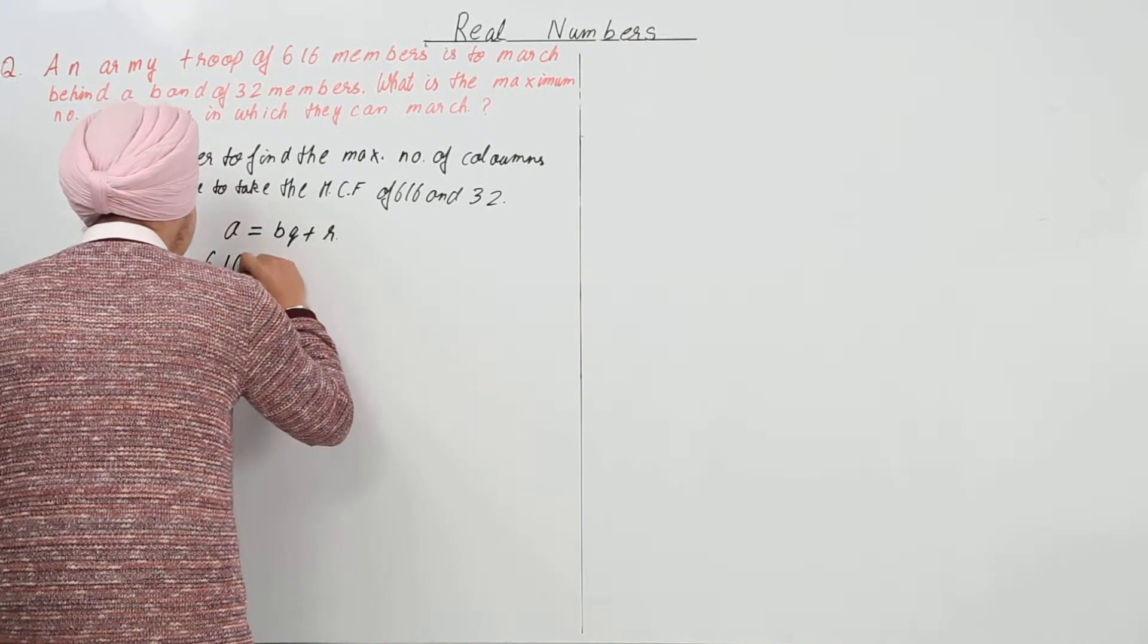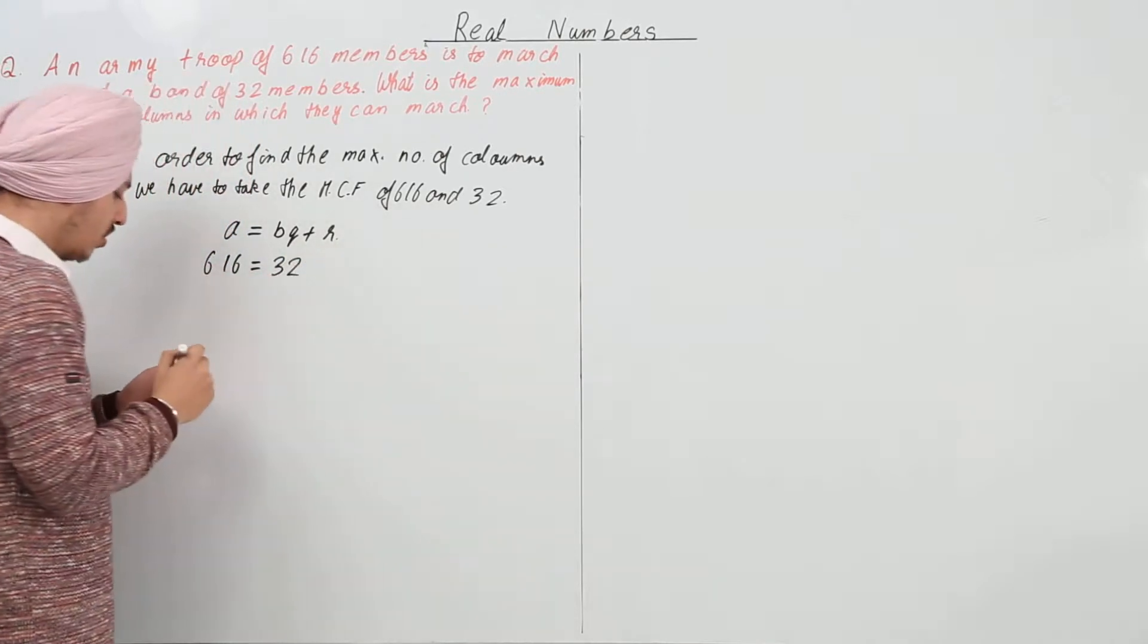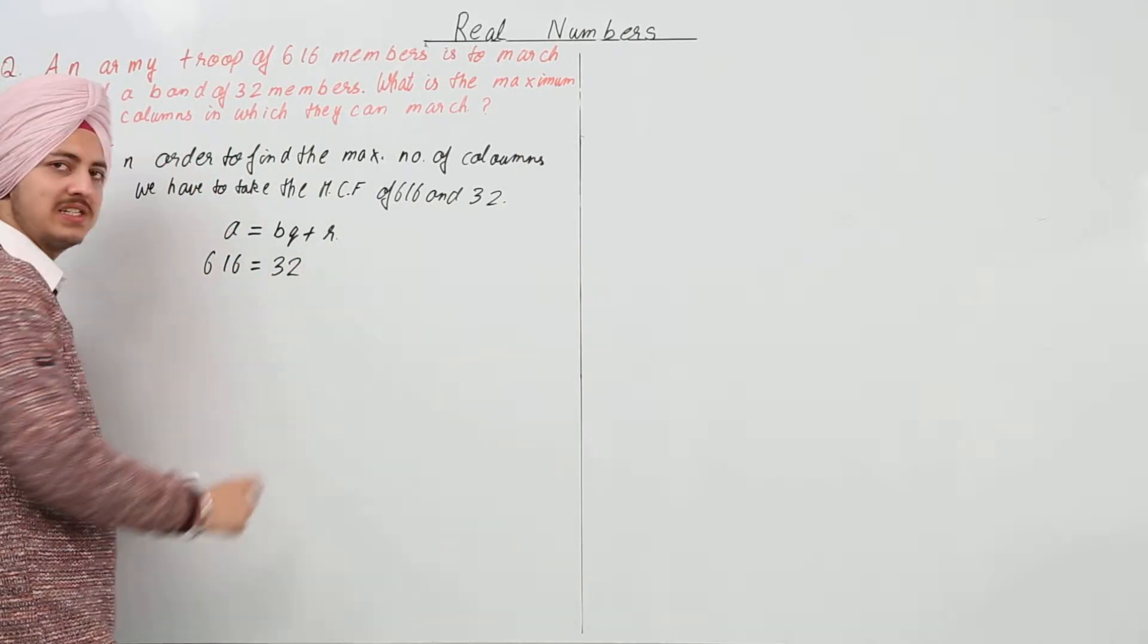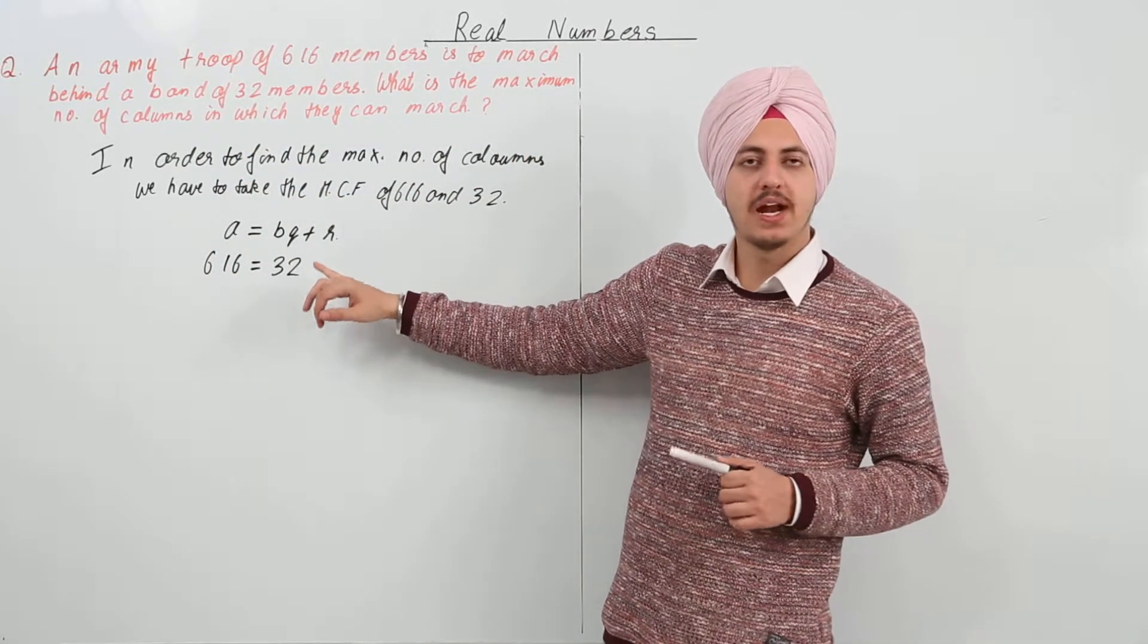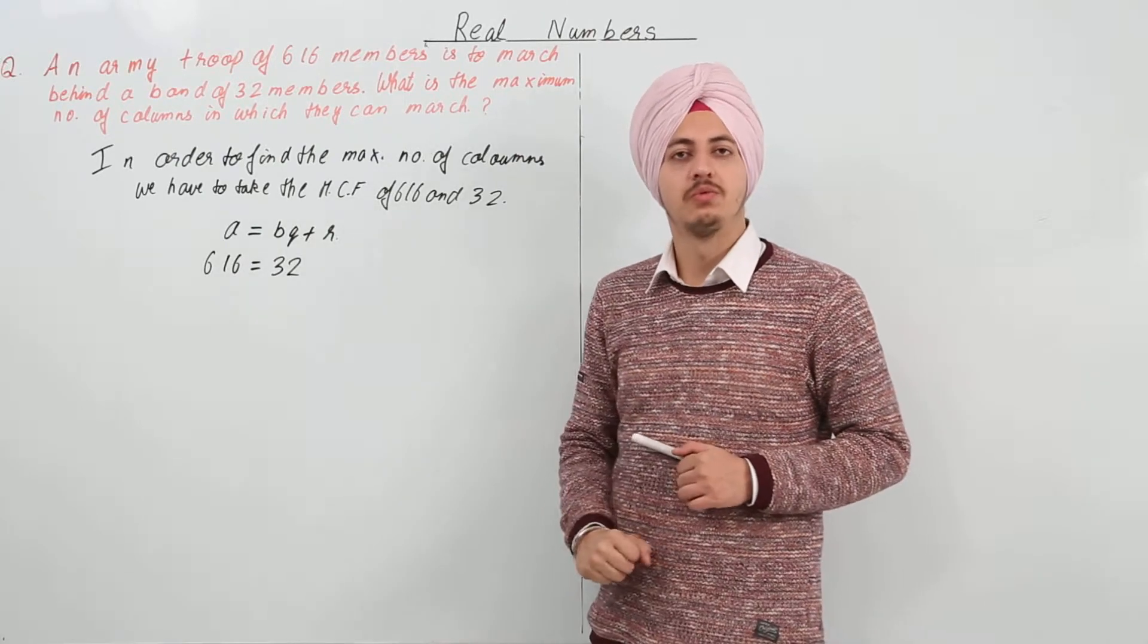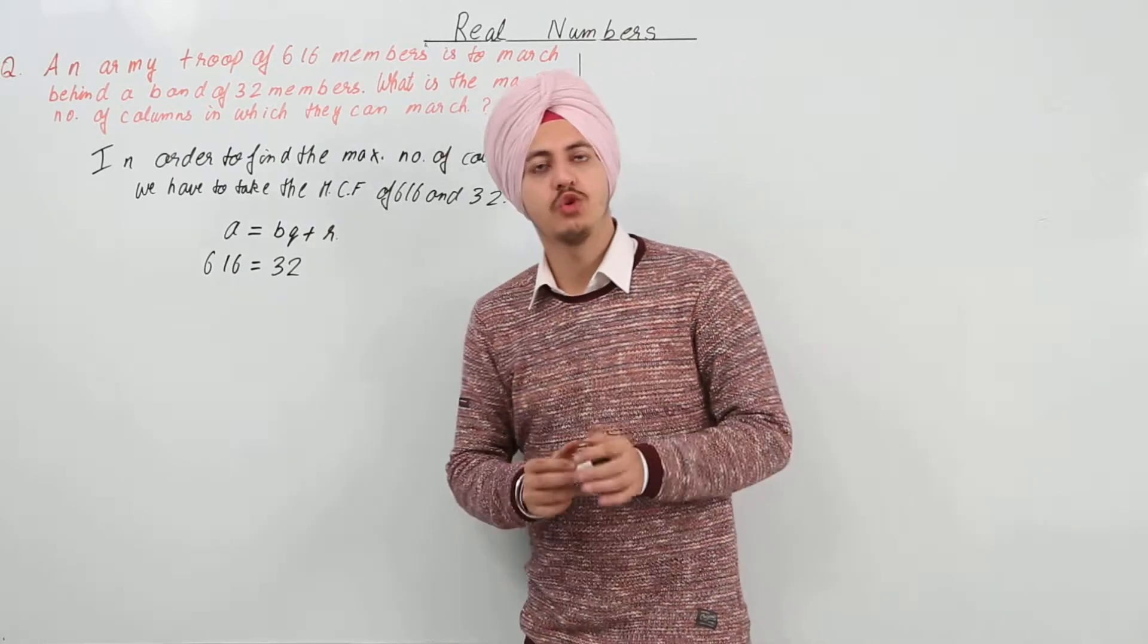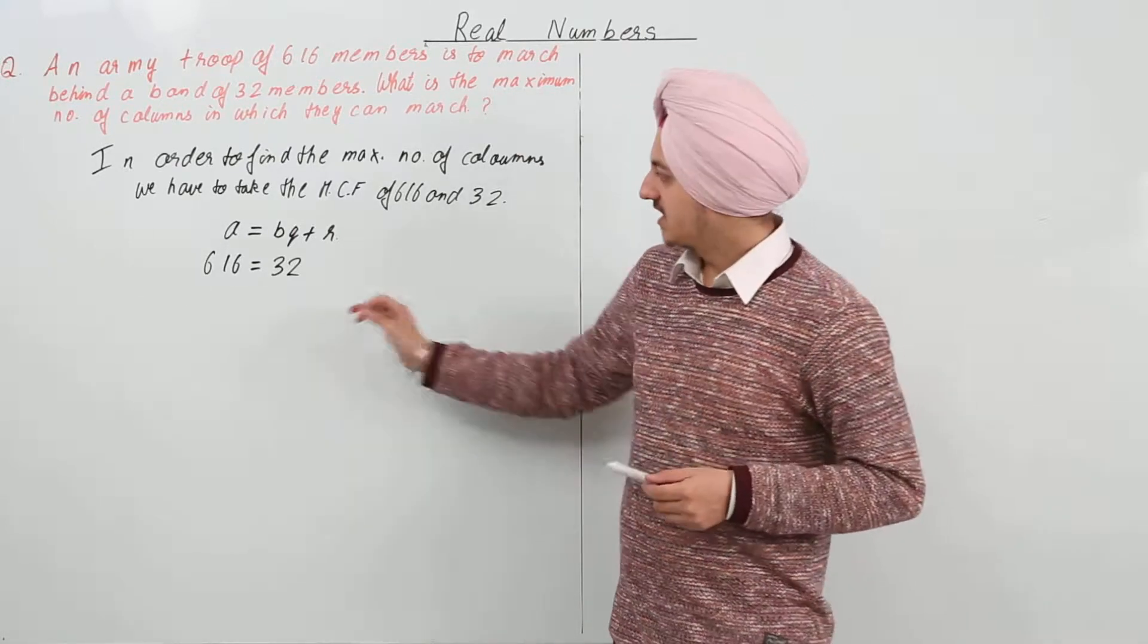So we have 616 is equal to 32 into something plus R. Tell me what is the number that will be multiplied with this so that the remainder comes out to be less than 32. If we multiply 32 by 20, the number is 640. That is greater than A, so that cannot be there.